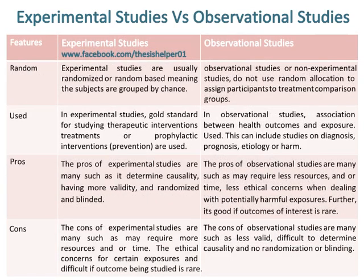Experimental studies are usually randomised, meaning subjects are grouped by chance, while observational or non-experimental studies do not use random allocation to assign participants to treatment comparison groups. In experimental studies, the gold standard for studying therapeutic interventions, treatments, prophylactic interventions, and prevention are used, while in observational studies, the association between health outcomes and exposure is used.